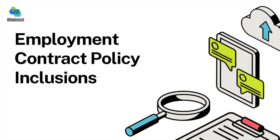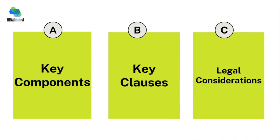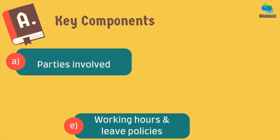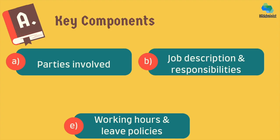Have a look at what should be included in an employment contract. We divided this into three categories: key components, key clauses, and legal considerations. Under key components, the first one is the parties involved, wherein we need to clearly define the employer and the employee and include details such as the company's registered office address and the employee's designation. The second is job description and responsibilities, providing a detailed description of the employee's role, duties, and reporting structure, with clarity in job expectations to help mitigate misunderstandings in the future.